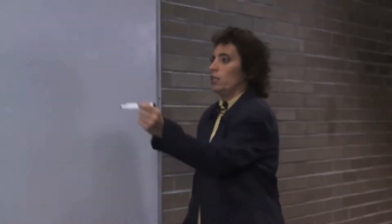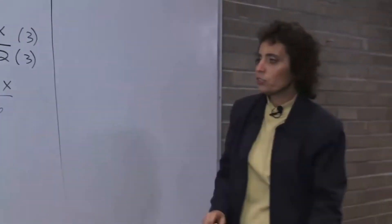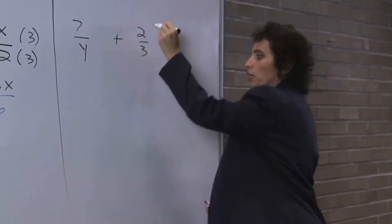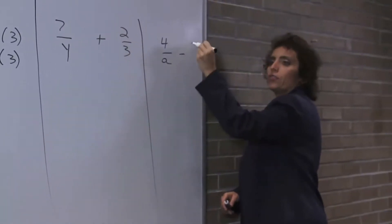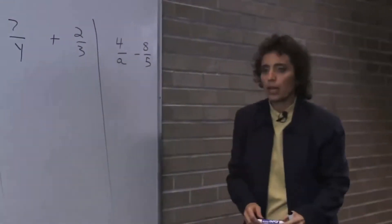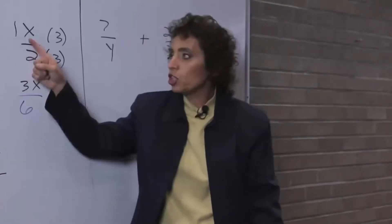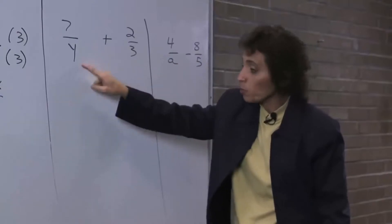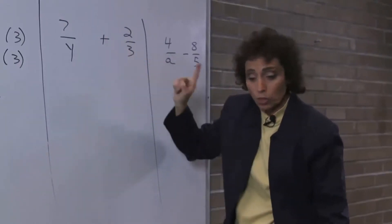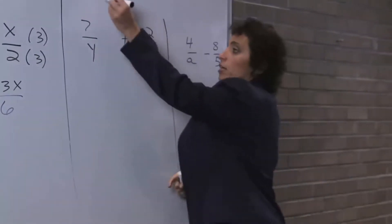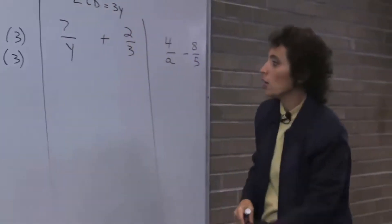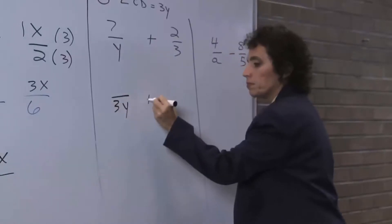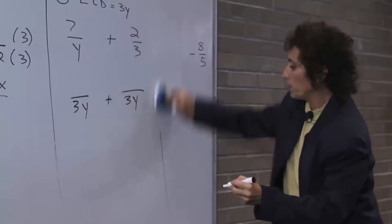Alright, let's keep this up for a minute. Let's talk about how these next problems are all different. This is 7 over y plus 2 thirds. That's 4 over a minus 8 over 5. In this problem, the variable's in the numerator. In these problems, the variable's in the denominator, so it's a little different. When you have only one variable in the denominator — when the variable's only in one denominator — all you're going to do to get the LCD is multiply. 3y will be your LCD.